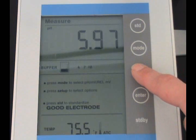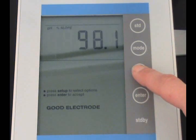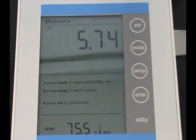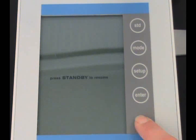Press the setup key twice and then enter to clear earlier calibrations. Turn the meter to standby.